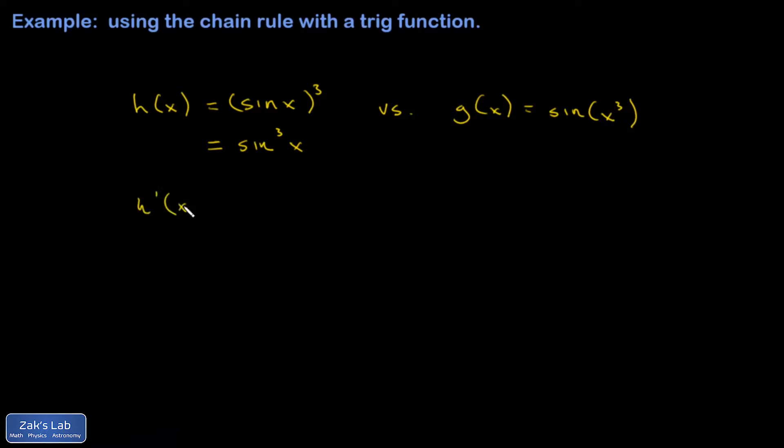So each is going to require the chain rule because I have a function of a function. h prime, well, the outer function is the cubing function, and the inner function is the sine function. So I differentiate sine of x cubed with respect to sine of x, treating it as a single variable.